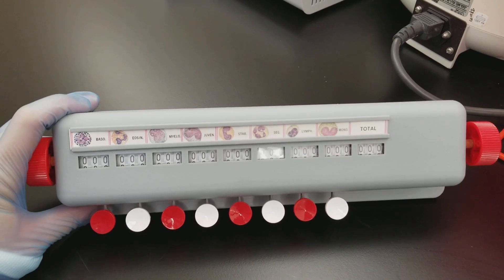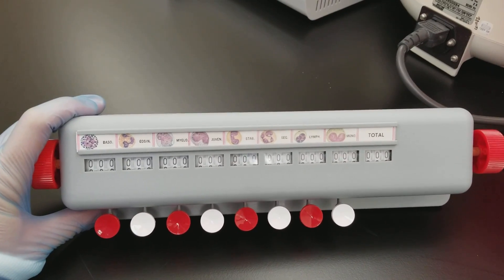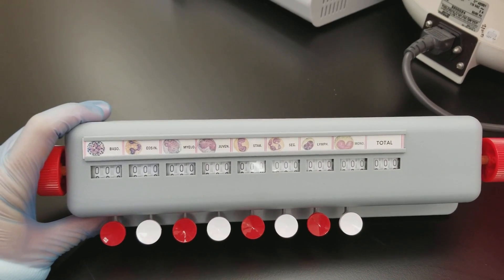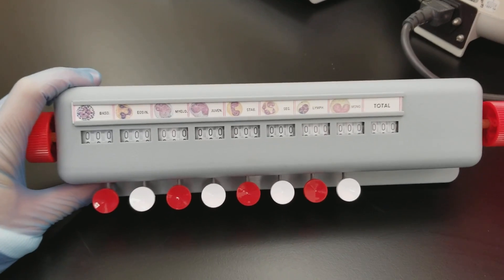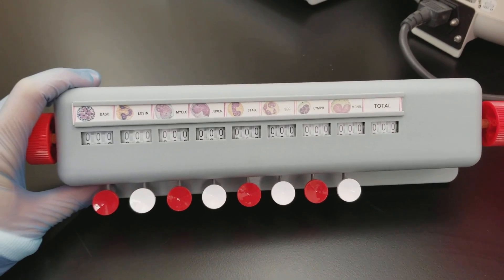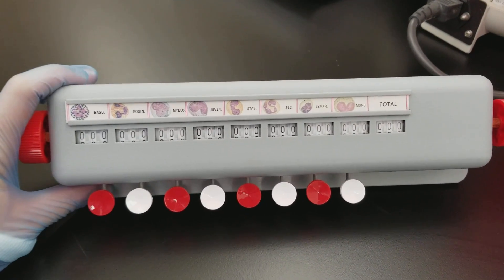You'll be looking at the red cells and the white cells and the platelets to make sure that everything looks pretty much how your CBC printout indicated.